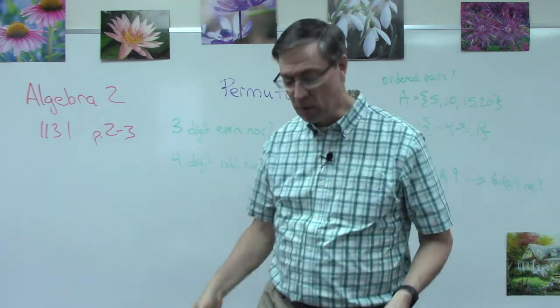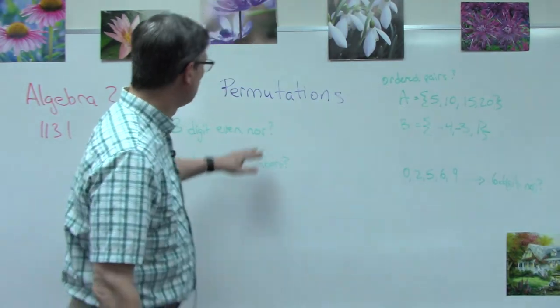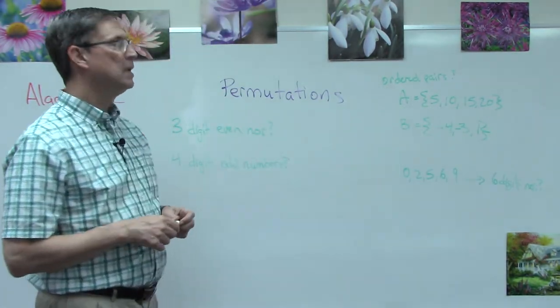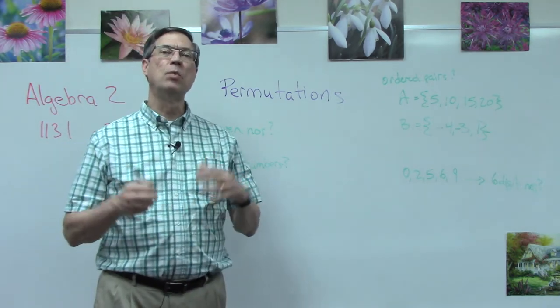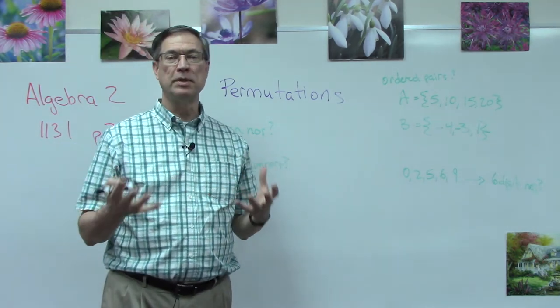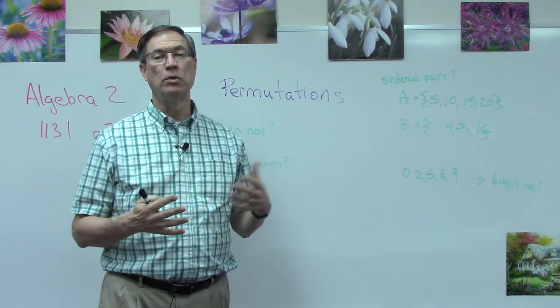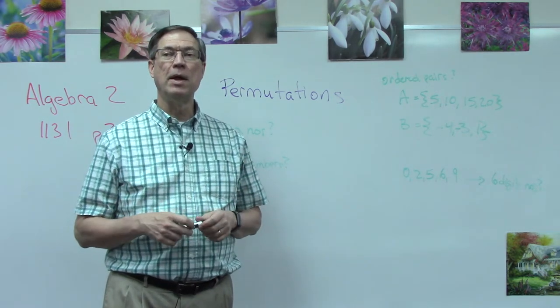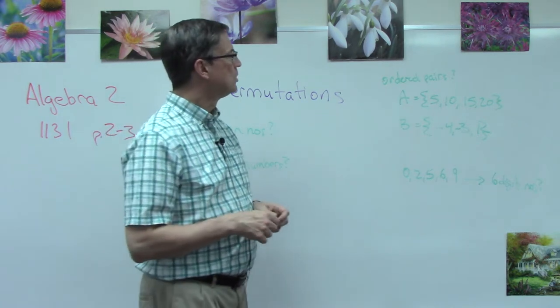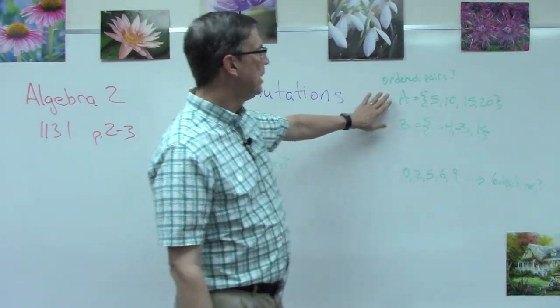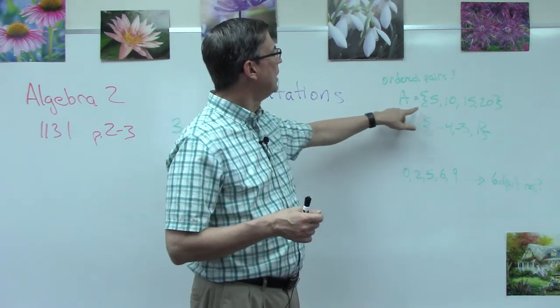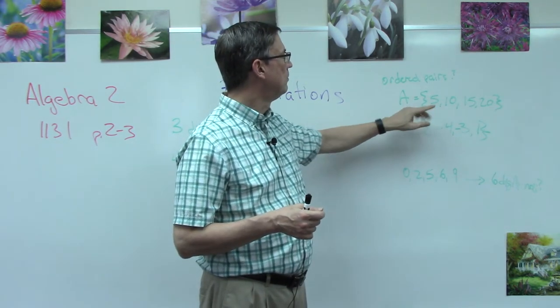One of the first concepts I want us to talk about here on page 2 and 3 is called permutations. Permutations is thinking about how many ways can numbers be put together. Maybe it's following a rule, maybe we have a limited number of elements of the set. One of the first things they talk about is ordered pairs. An ordered pair is we take one element from this set and we're going to match it to the elements in this set.